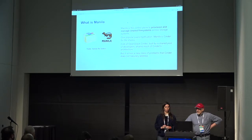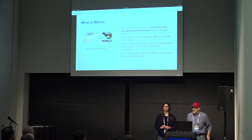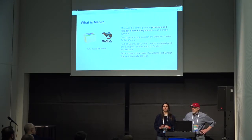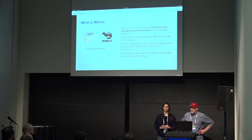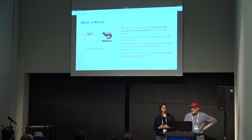Manila is probably the control plane to provision and manage shared file systems across storage systems. It's an abstraction layer just the way that Cinder is an abstraction layer above block storage and has different block storage backends — we do that for file shares. It's forked off from Cinder but it actually solves a new class of problems.